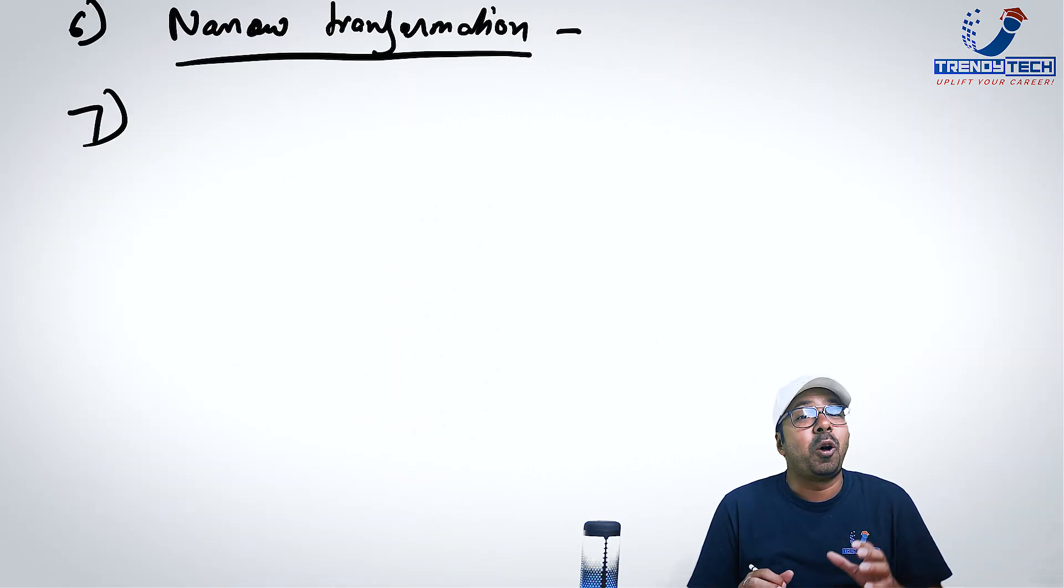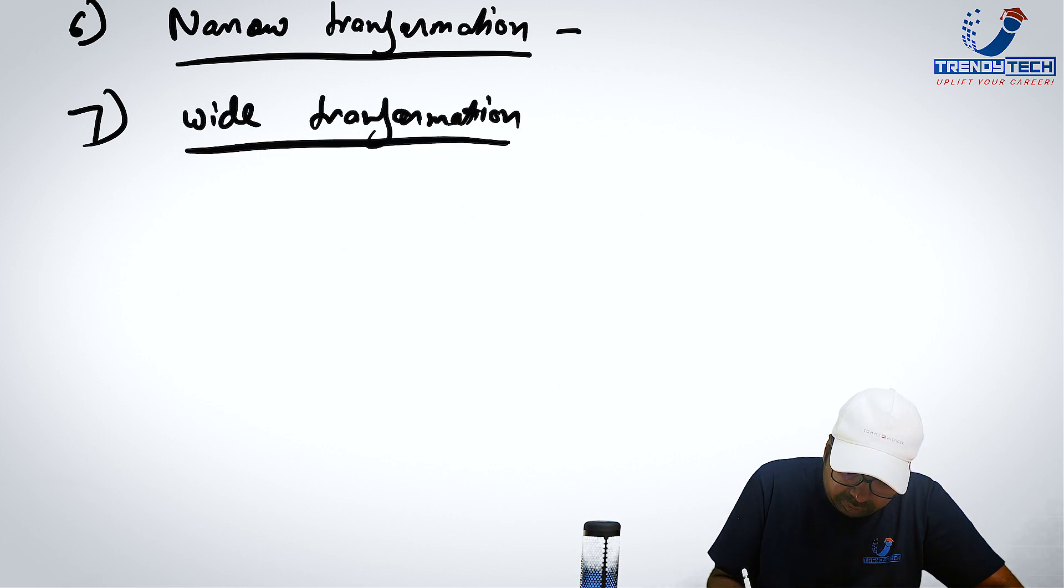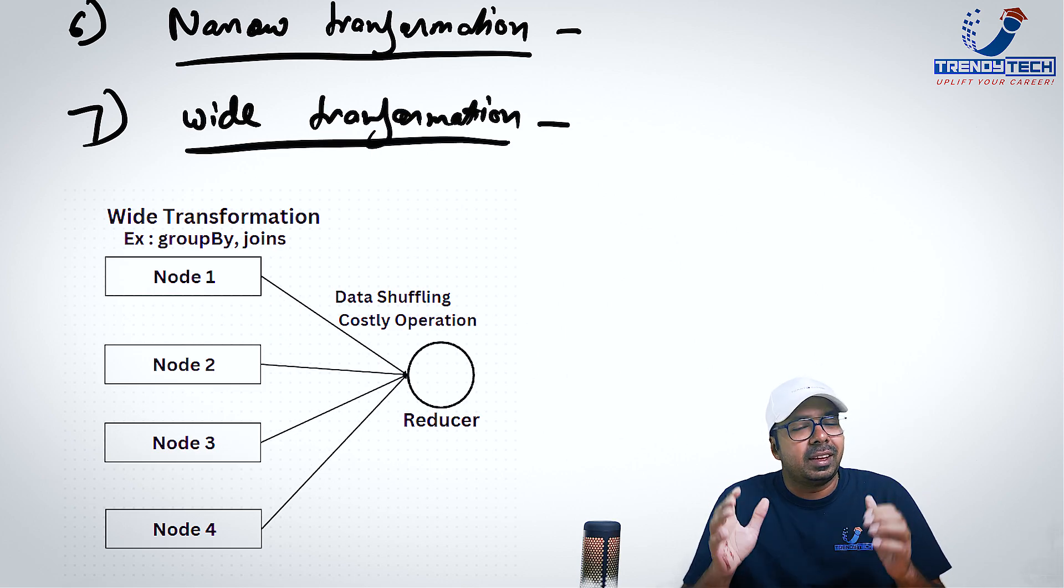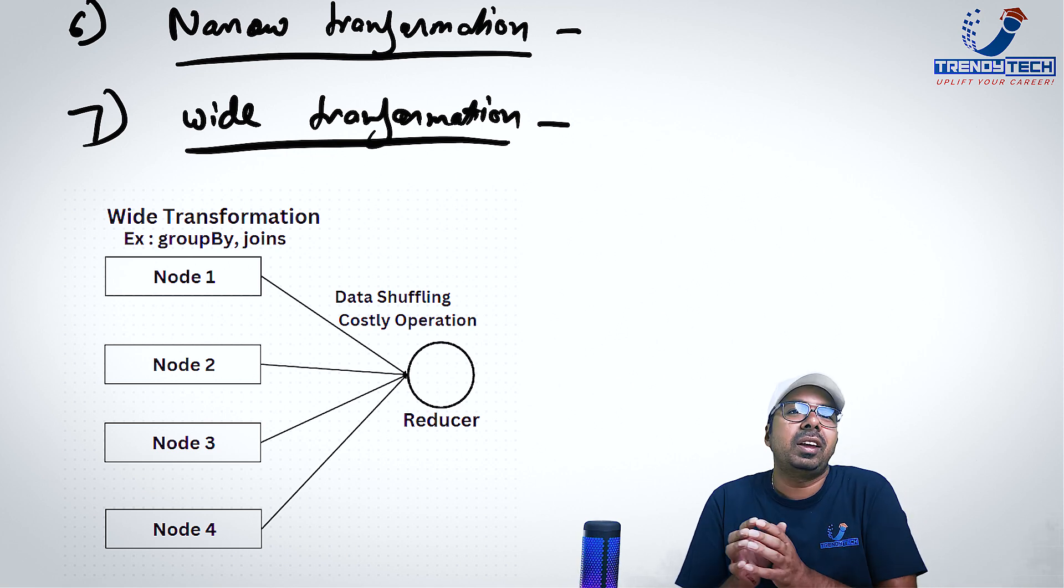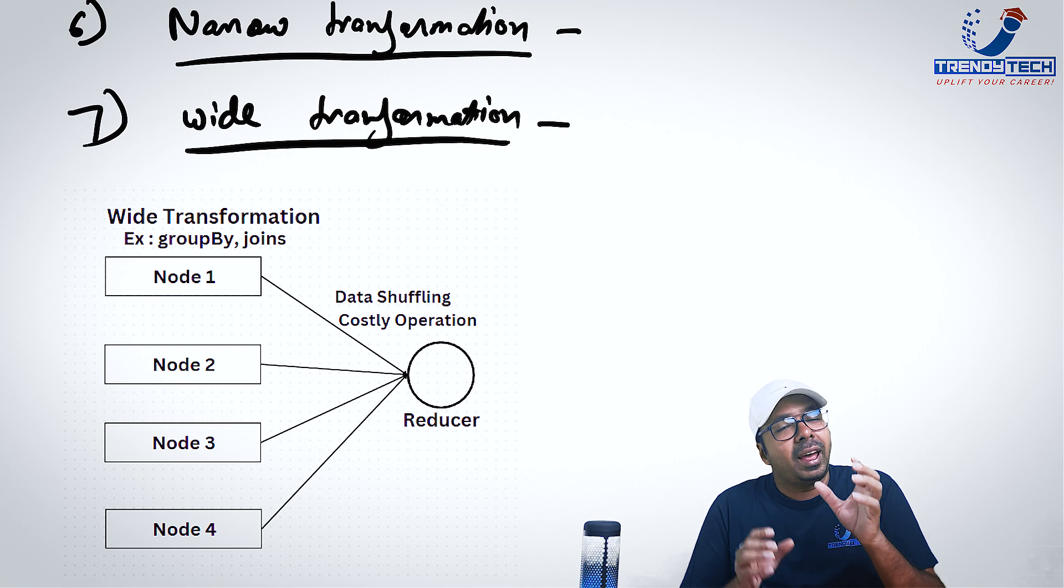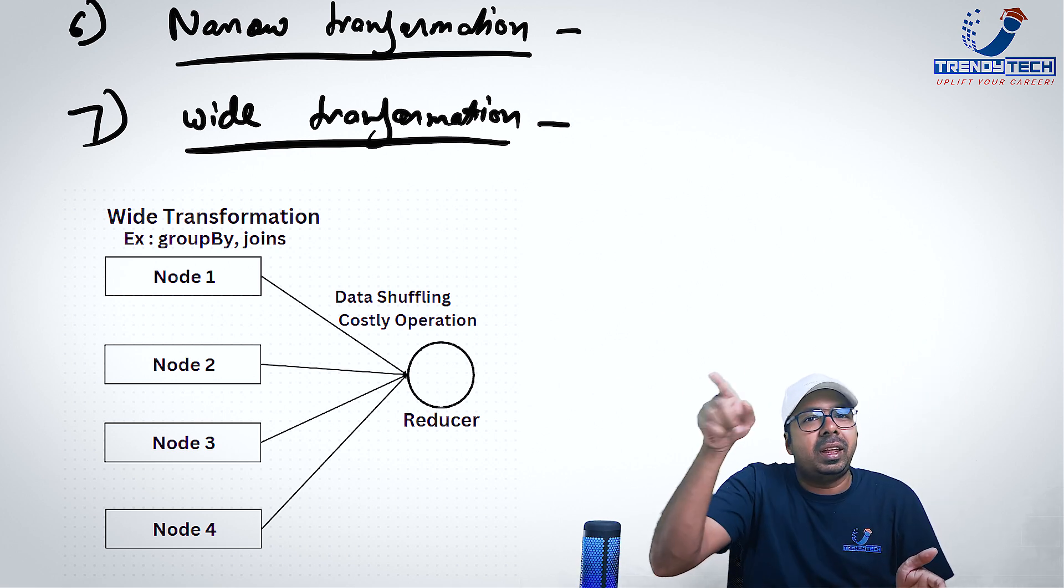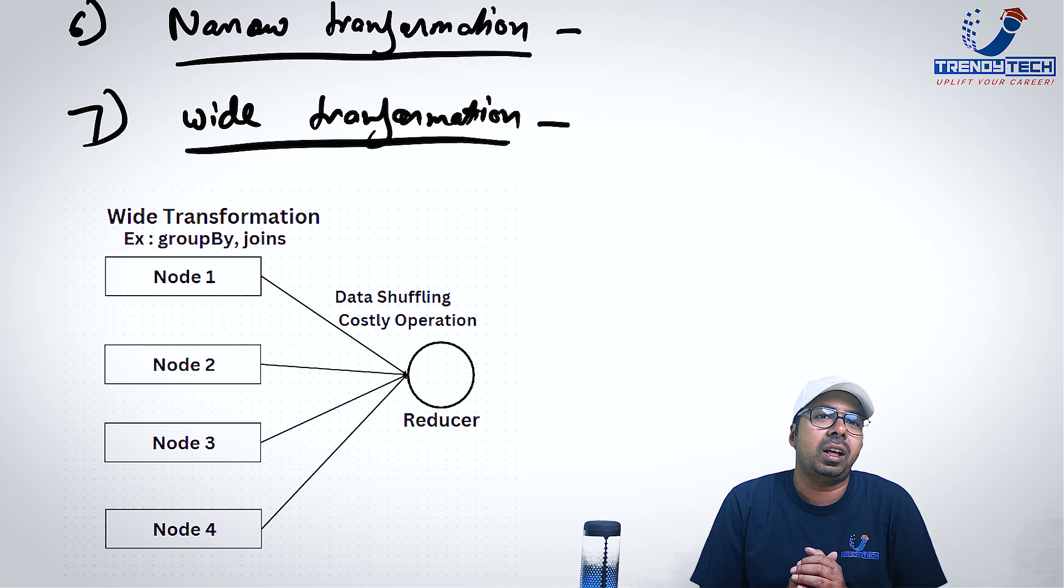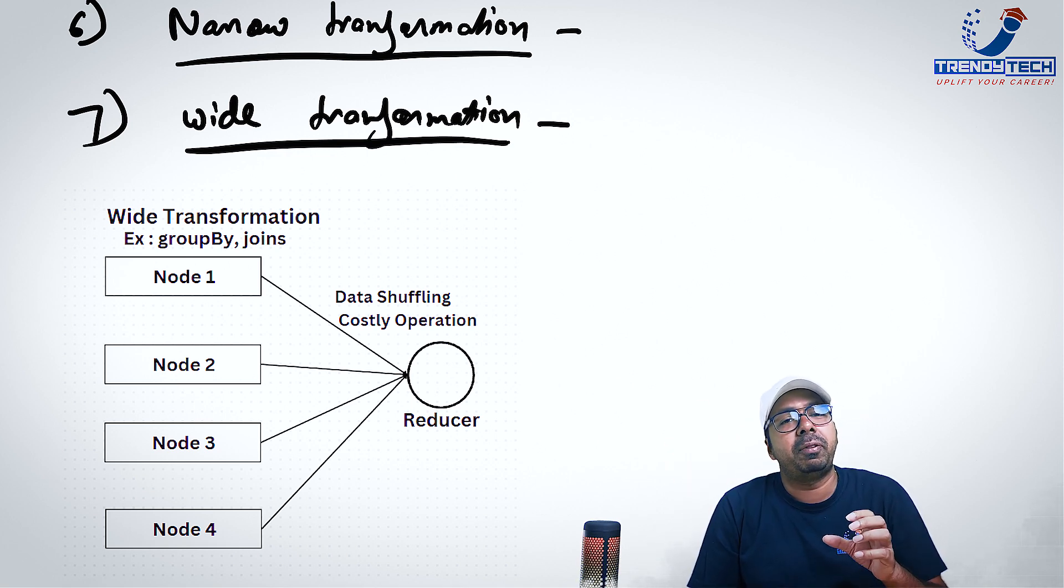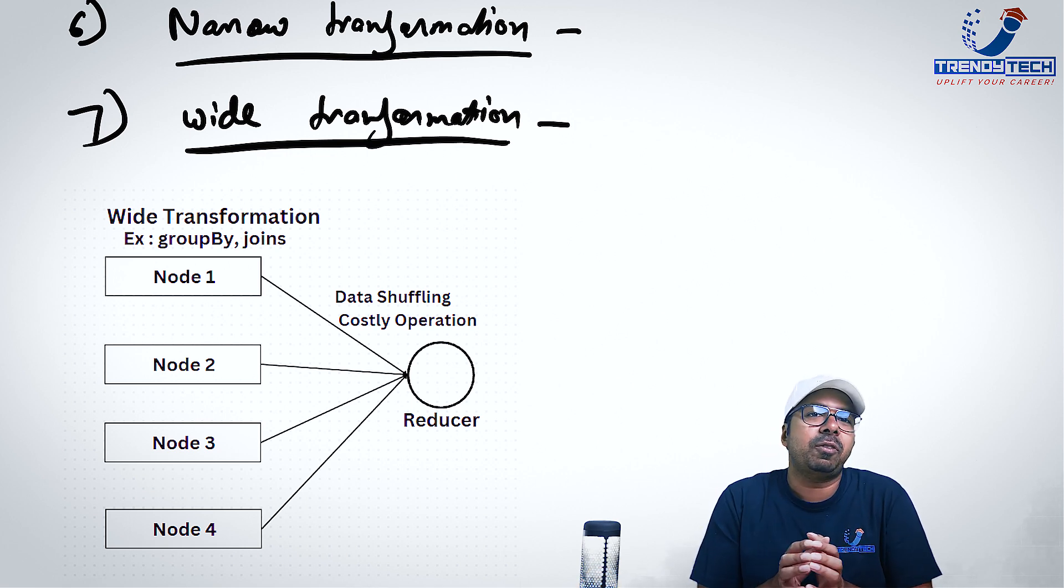Next in our list is a wide transformation. Wide transformation, as the name might suggest. Here, shuffling is involved. That means the data movement has to happen at some point of time. The work cannot happen in isolation altogether. So some work can happen in isolation. But after that, some shuffling of data or movement of data would be required. For example, when we do aggregations like group by, joins and these kind of stuff. So these are wide transformations and are little heavy transformations which takes time. Because shuffling is a costly operation and we want to avoid it whenever possible.